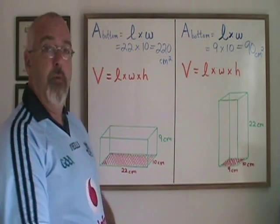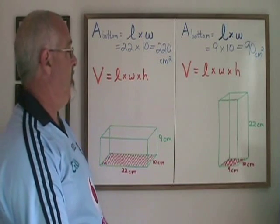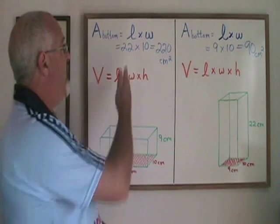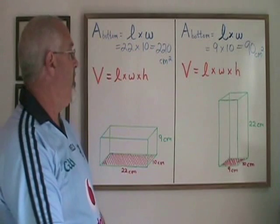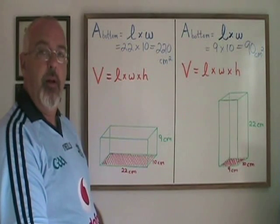Now let's look at the volume formula for a rectangular prism. The volume formula is very similar to the area of a rectangle formula. It's length times width, but also times height.